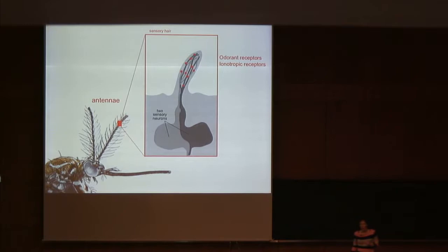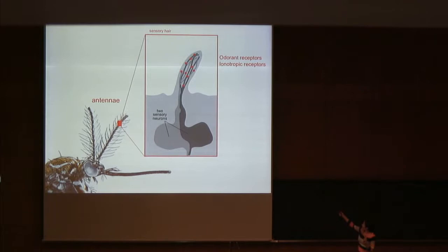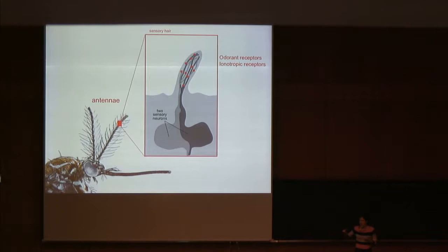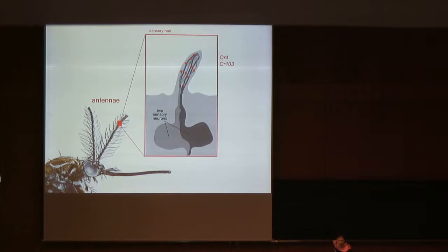Odorant receptors are olfactory receptors expressed in olfactory sensory neurons housed in sensory hairs on the antennae and other olfactory organs of the mosquito. Olfactory receptors in insects come in two different flavors: a large family of over 100 odorant receptors in mosquitoes, and a smaller family of about 30 ionotropic receptors that all function to detect odors. With very few exceptions, both in insects and mammals, an individual olfactory sensory neuron expresses just a single ligand-selective receptor, which determines which odors that population of sensory neurons will respond to. Our screen identified two odorant receptors — OR4 and OR103 — that were associated with preference.